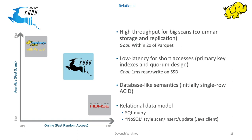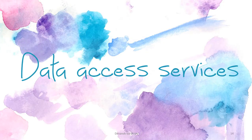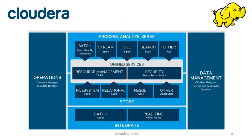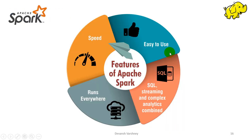The next topic is data access services. In data access services we have Apache Spark, Apache Hive, Impala, Solr, Apache Pig, Kite, and MapReduce. We are currently discussing this part of the Cloudera architecture. Let's get started with Apache Spark.